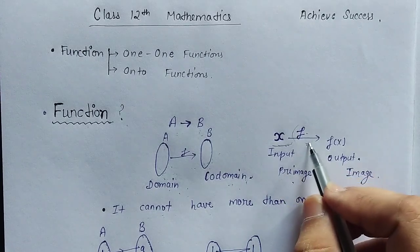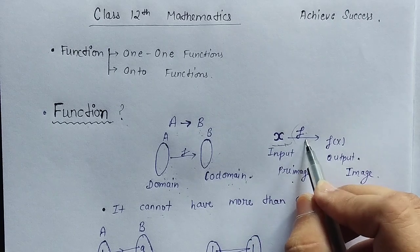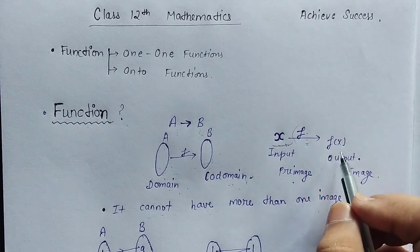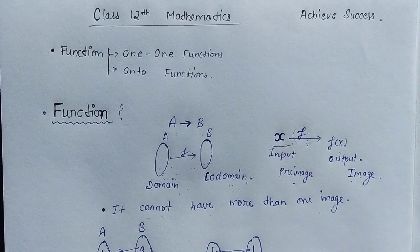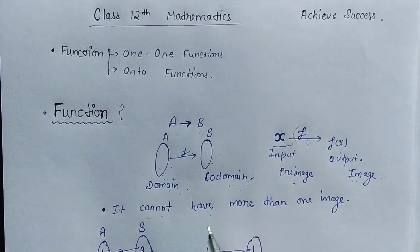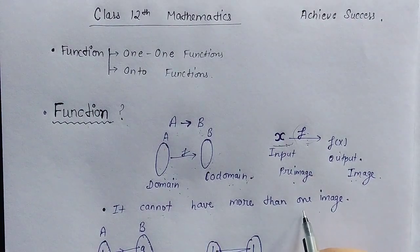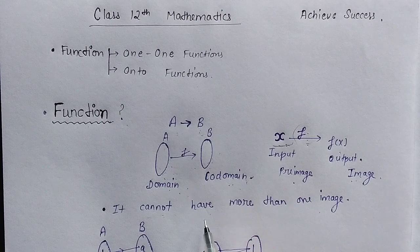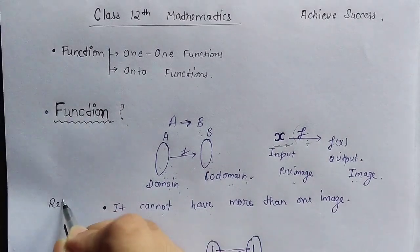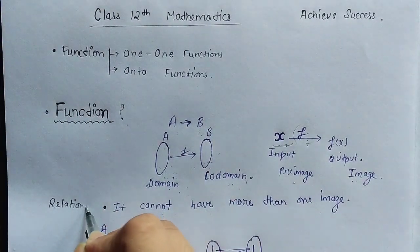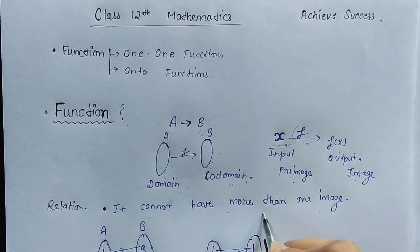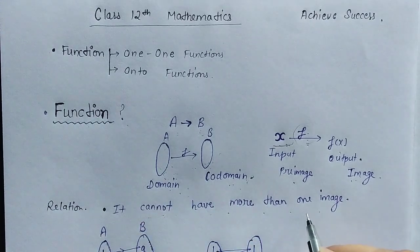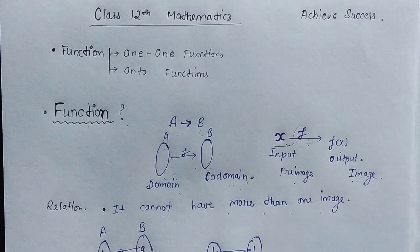After putting the value of x into the function, we get the output which is known as the image, and it cannot have more than one image. What is the difference between a relation and a function? In a relation, we can have more than one image, but a function cannot have more than one image.